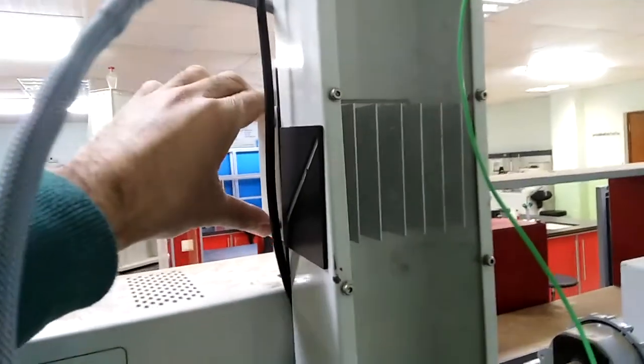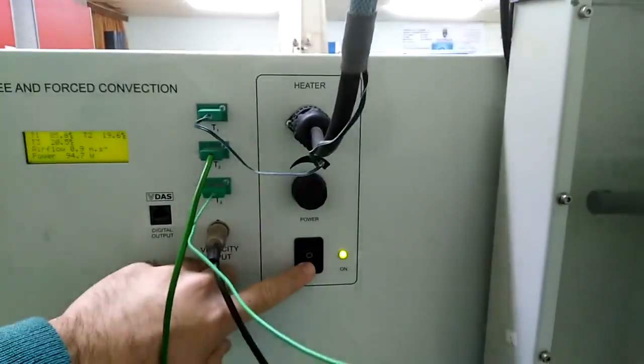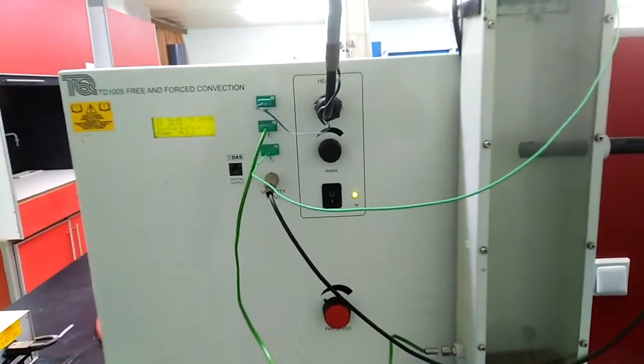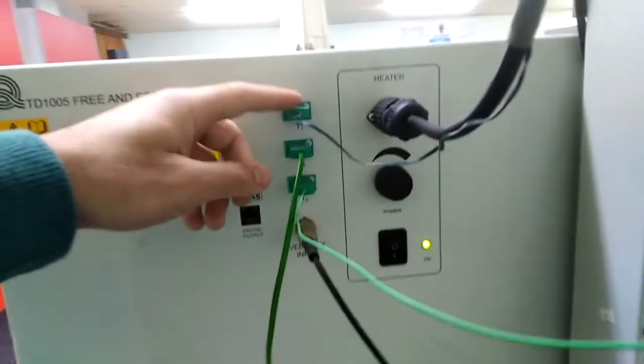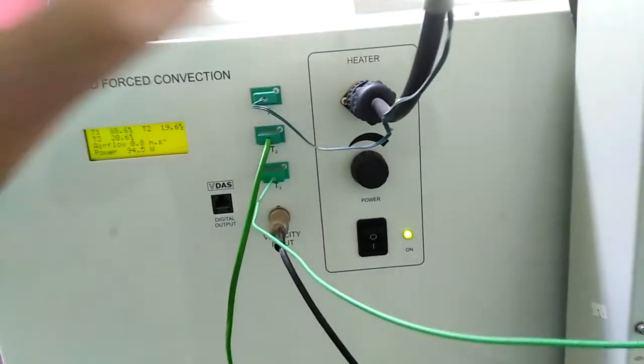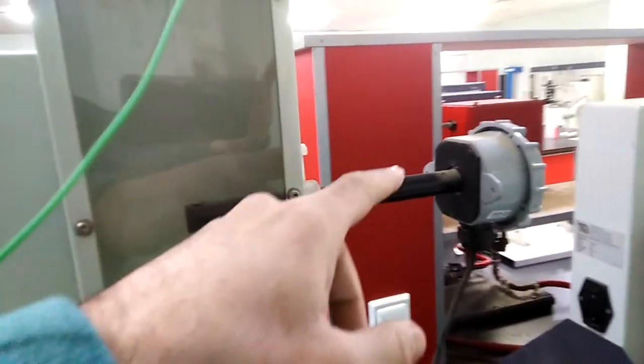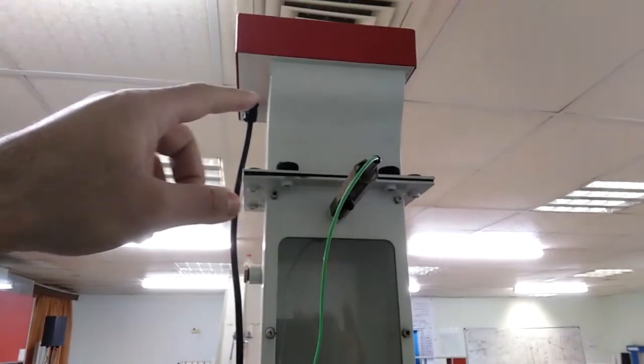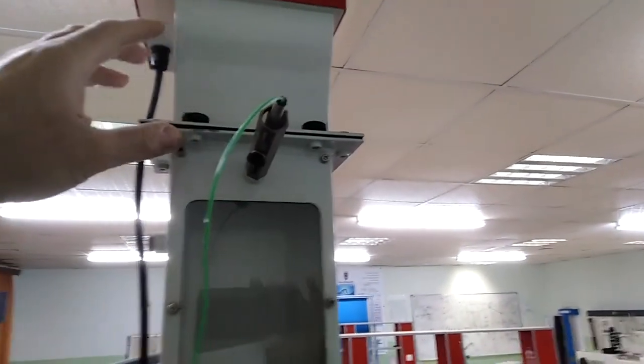After fixing the surface, we switch on the device. The device consists of three thermometers located in different places and an air flow meter for forced convection. Air enters from here and exits from above. There's a fan here which we can control from this panel.